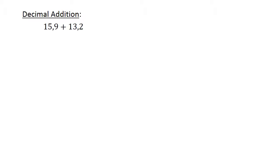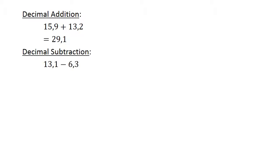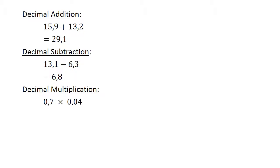Decimal addition: 15,9 plus 13,2 equals 29,1. Decimal subtraction: 13,1 minus 6,3 equals 6,8. Decimal multiplication: 0,7 times 0,04 equals 0,028.